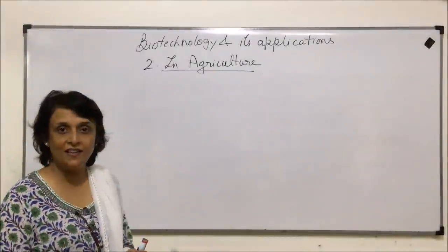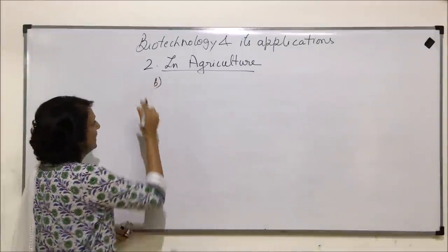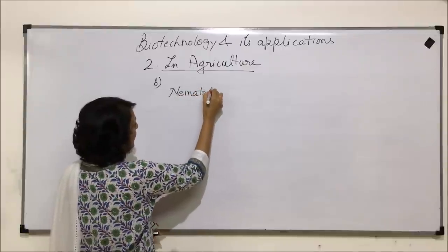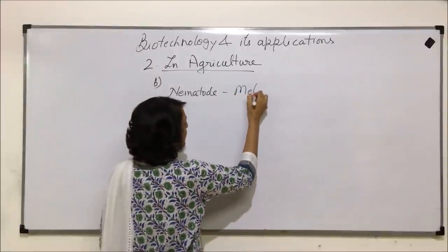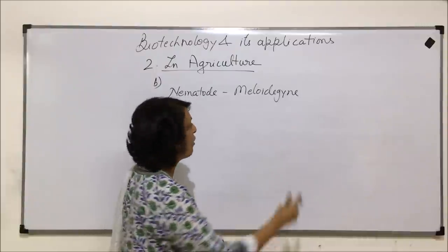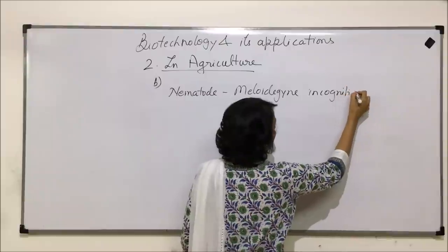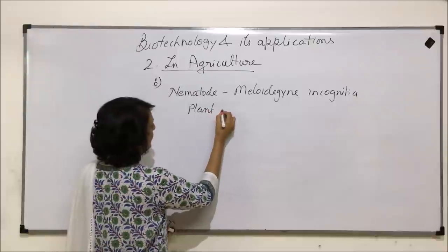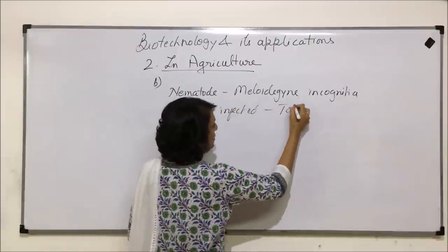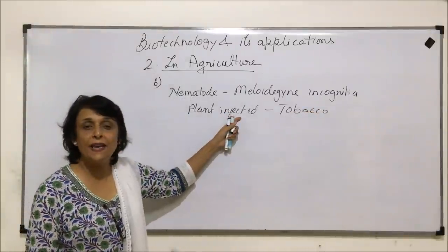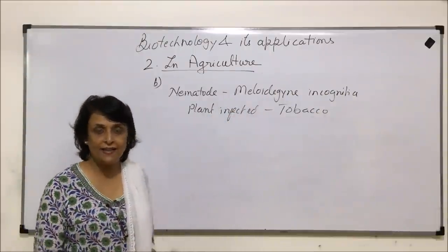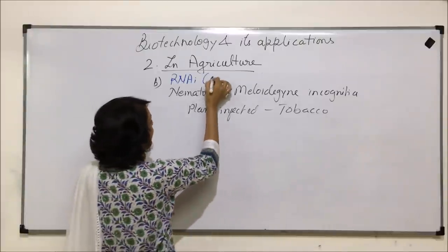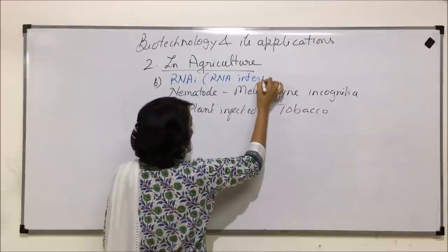Let us take another example in the field of agriculture to obtain one more type of pest-resistant plant. There is a nematode called Meloidogyne incognita. It infects tobacco plants, so the plant which is infected here is tobacco.